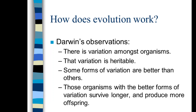That's Darwin's great idea — these five observations and his logical conclusion: when more offspring are produced than can possibly survive, those organisms with the better forms of variation are going to be the ones that survive longer and produce more offspring.